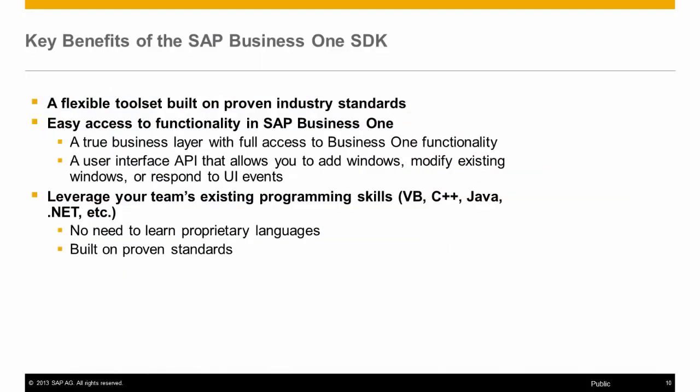Key benefits of the SAP Business One SDK include a flexible toolset built on proven industry standards, easy access to functionality through a true business layer with full access to Business One functionality, a user interface API that allows adding windows, modifying existing windows, and responding to UI events. You can also leverage your team's existing programming skills such as VB, C++, and Java — there is no need to learn proprietary languages, as your team can use industry standards they have already built skills on.